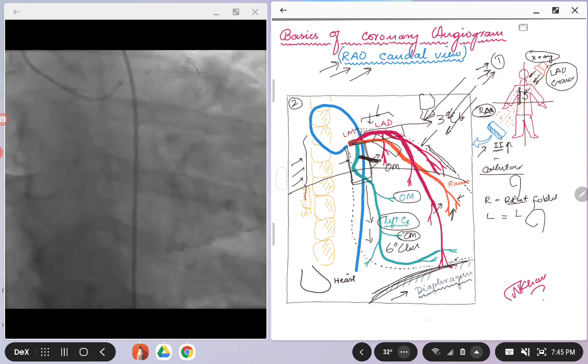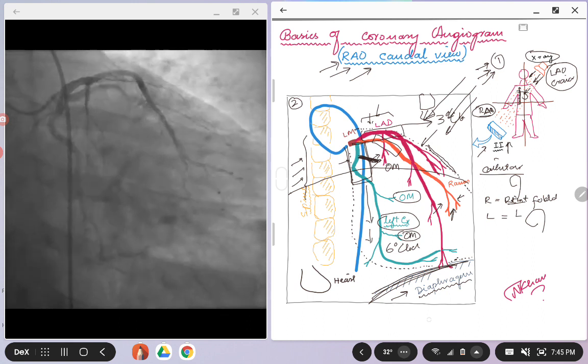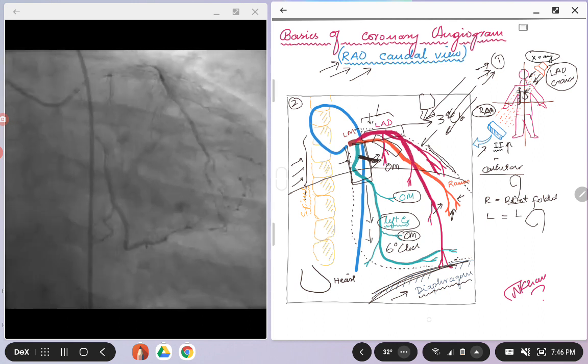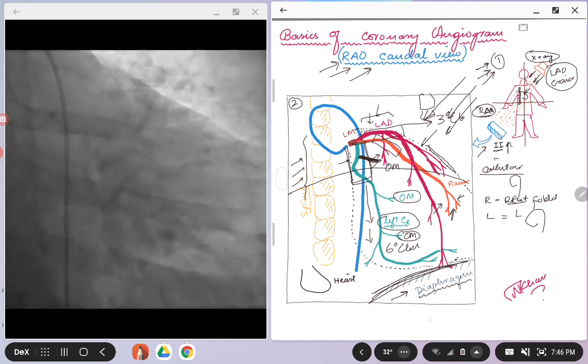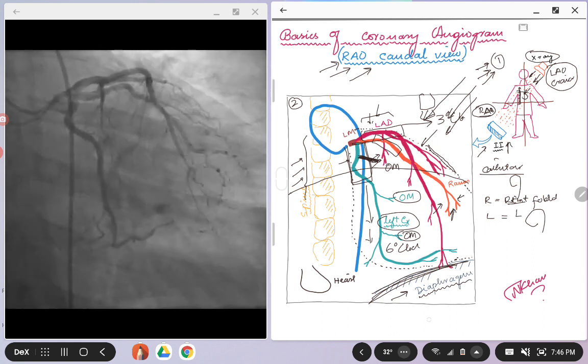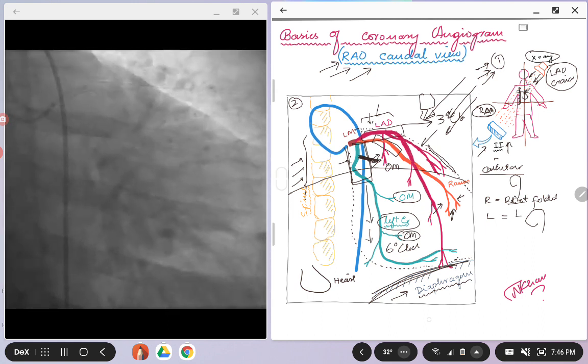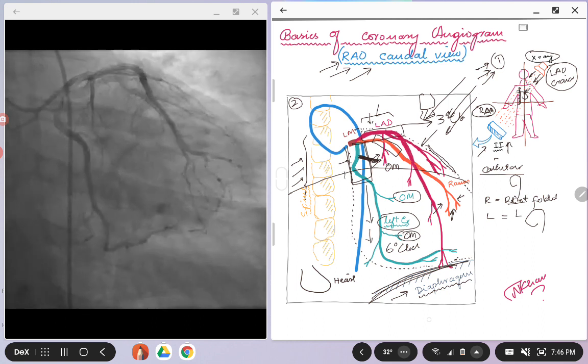As compared to the spider view where we saw that the spine was on the right side. Another clue to kind of let you know: okay, the spine is shifted towards the left, it's probably an RAO view. If the spine is shifted towards the right, it's probably an LAO view.